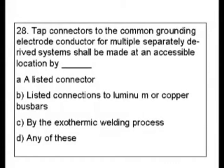Question 28. Tap connectors to the common grounding electrode conductor for multiple separately derived systems shall be made at an accessible location by: A. A listed connector. B. Listed connections to aluminum or copper bus bars. C. By exothermic welding process. D. Any of these.